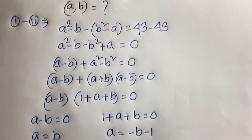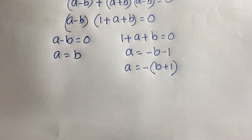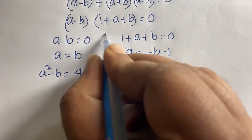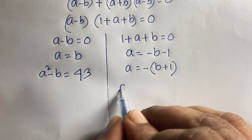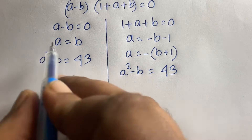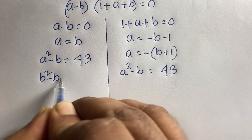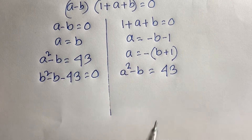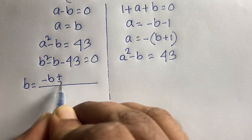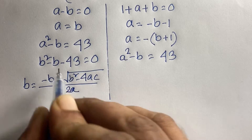Remember our first equation is A squared minus B equals 43. For Case 1, where A equals B, substituting gives B squared minus B equals 43, so B squared minus B minus 43 equals 0. This is a quadratic equation.